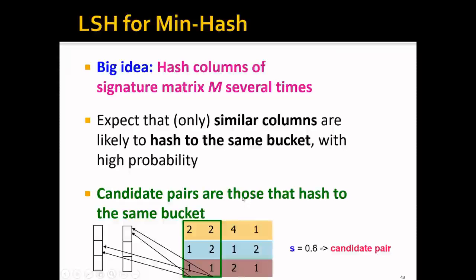Let's go back to this small signature matrix. We set the threshold to 0.6. For the first hash function, these two columns will be hashed into the same bucket. Since they're similar, they're actually candidate pairs. Most probably, if we have a second hash function, they will also be hashed into the same bucket.